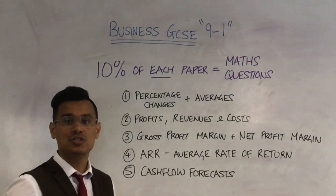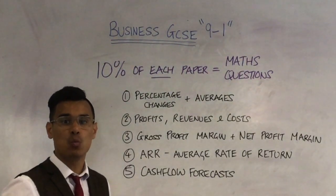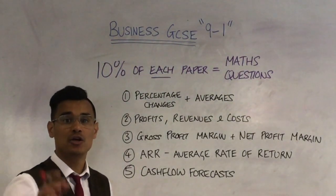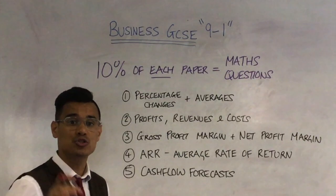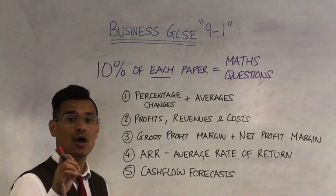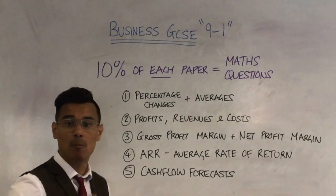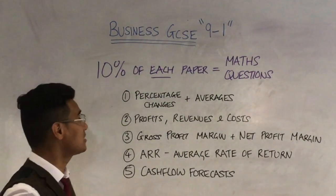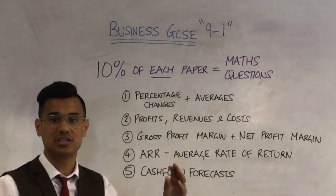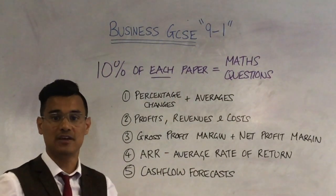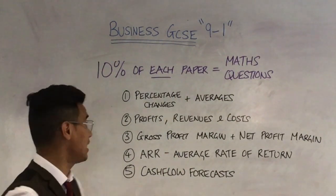Okay, let's look further at the Business GCSE 9-1 structure. You're having two papers. Those two papers each now have 10% maths questions — numeracy. Do not fear, BizCon is here.